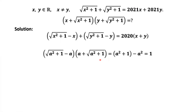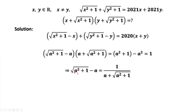Let's consider this identity. The square root of a squared plus 1 minus a, times the square root of a squared plus 1 plus a, equals the first term squared minus the second term squared, which is a squared plus 1 minus a squared. We get 1. The two numbers are reciprocals of each other.